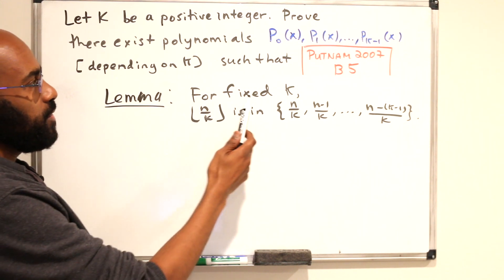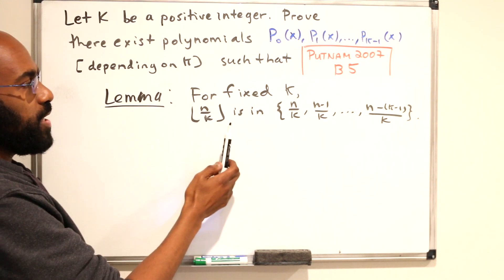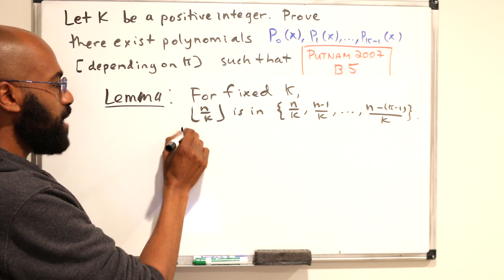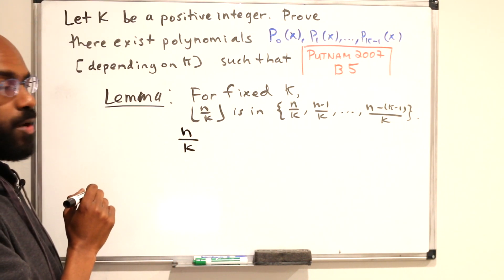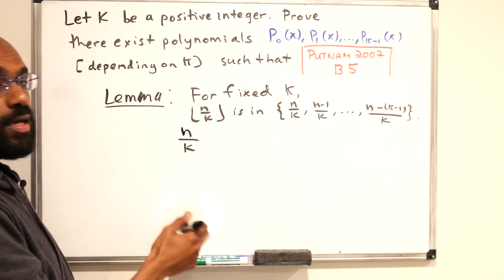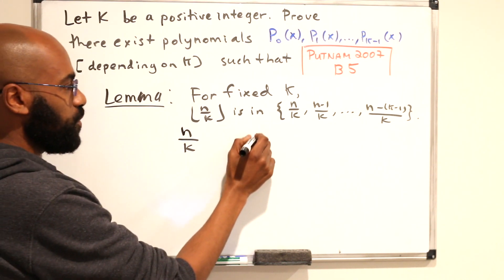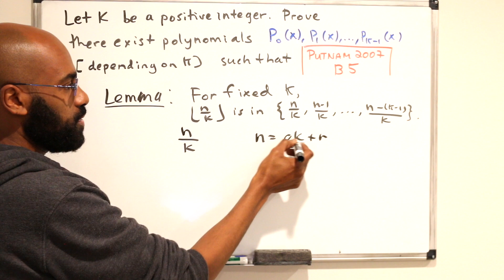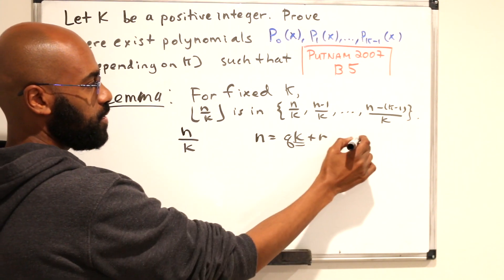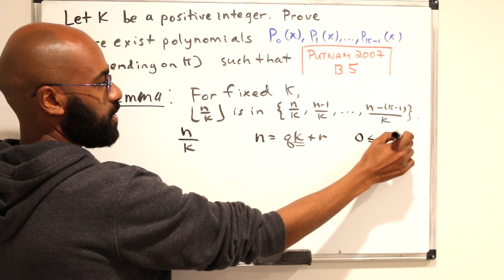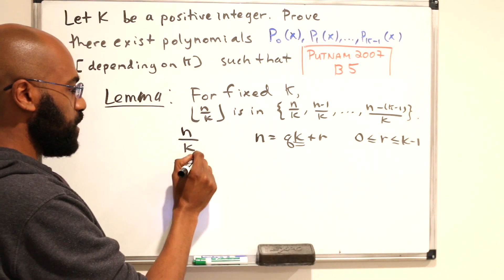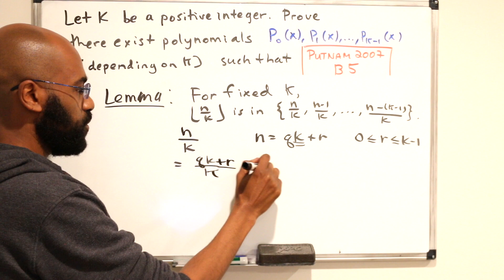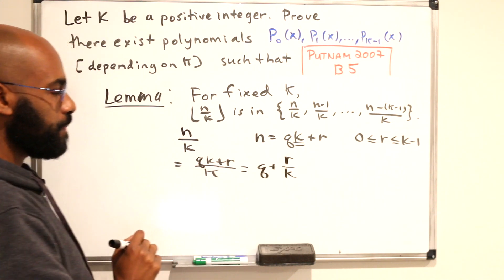Okay, so if I wrote this as a lemma, for fixed k, the floor of n over k has to be in this set right over here. Alright, so the question is why is this the case? Well, let's think about how we actually compute n over k. What we do is we take n, we divide it by k, get a quotient and a remainder. Alright, so we can represent n as q times k plus r, and that remainder is something, because we're dividing by k, between 0 and k minus 1. So this number n over k is really qk plus r over k, which is q plus r over k.